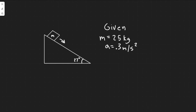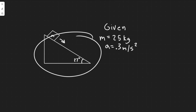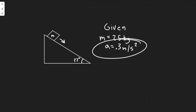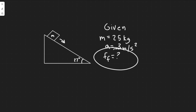In this problem, a 25 kilogram box is released on a 27 degree incline and accelerates down the incline at 0.3 meters per second squared. We need to find the friction force impeding its motion and the coefficient of kinetic friction, which I'll denote as FF and mu sub k respectively.